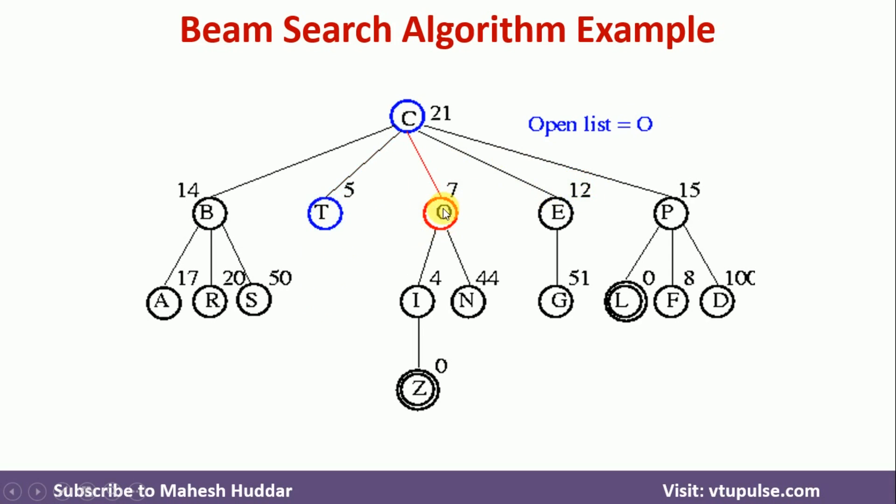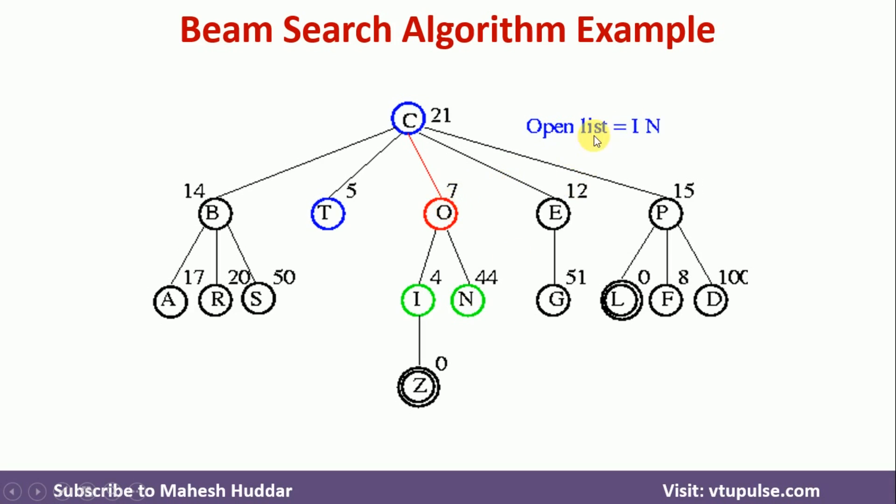Now we will examine O. For this particular O, we have I and N are the successors. So we will remove O from the open list, and then we will put I and N on the open list here. Again, if you see, we have kept only two nodes on the top of this particular open list here. The meaning of this one is the value of N in this case is 2 here.